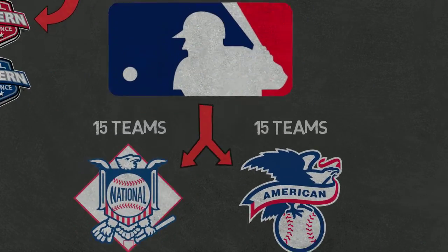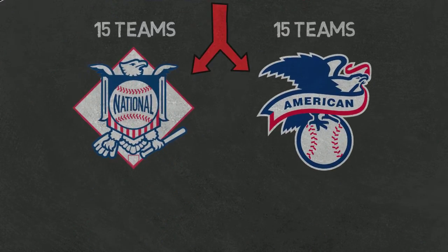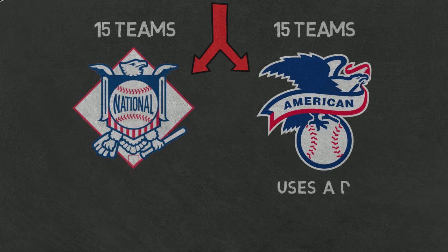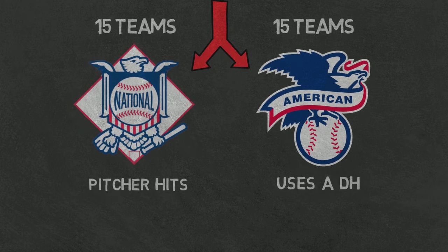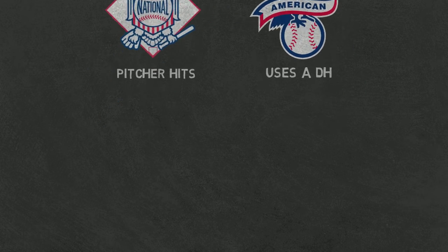And that brings us back to present day, where the two leagues are just historical subdivisions for MLB. The one major difference is that the American League uses a designated hitter in place of a pitcher hitting in the lineup, while the National League has the pitcher hit.